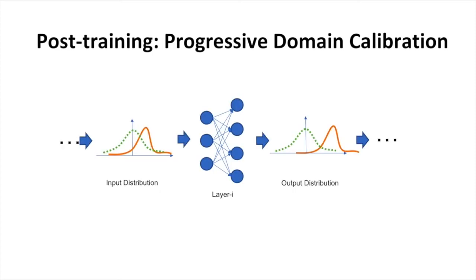After training, we use progressive domain calibration to calibrate the output distribution of the layers one by one.